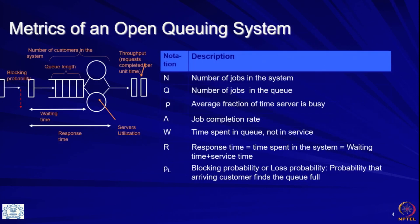These are the metrics — again you should start remembering what these are: the number of jobs n, q, rho, capital lambda, w, r, p, l. You can refer to this slide separately when you are watching the lecture.